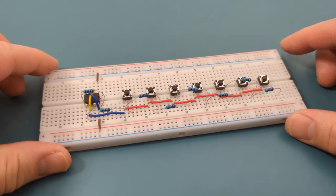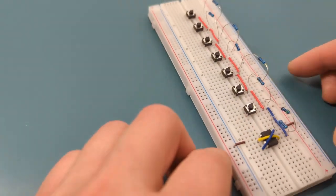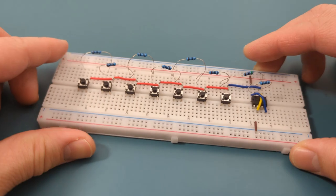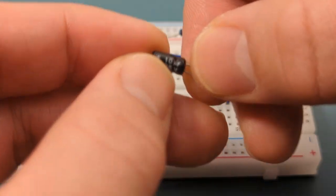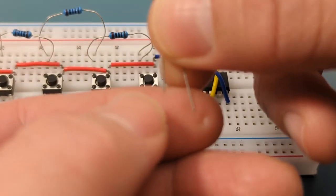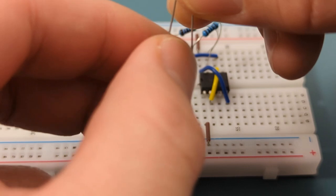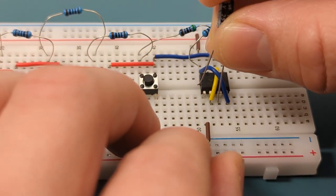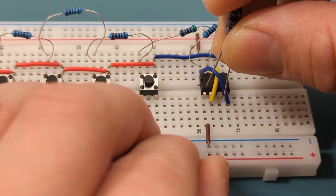Turn the breadboard to the other side. Insert a 10 microfarad capacitor into pin 3, or output, and the other leg a few rows above the 555 timer. Insert the longer leg into pin 3.